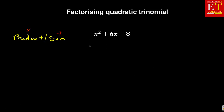In the product sum method, if I look at the variables, we have a one — if it's not given, it means it's one x squared plus six x plus eight. So there is always a one before the x squared. The coefficient of x squared is one, the coefficient of x is positive six, and the constant is just eight. So when using the product sum method, you take the first number and the last number and multiply them to get your product. The center one is your sum.